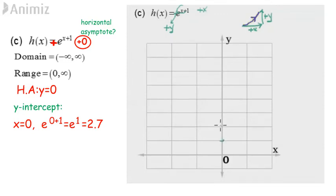Now, we plot the y-intercept. When x is 0, y is 2.7. The horizontal asymptote for this graph is y equals 0. So the graph exists above the x-axis. Label the graph as h(x).